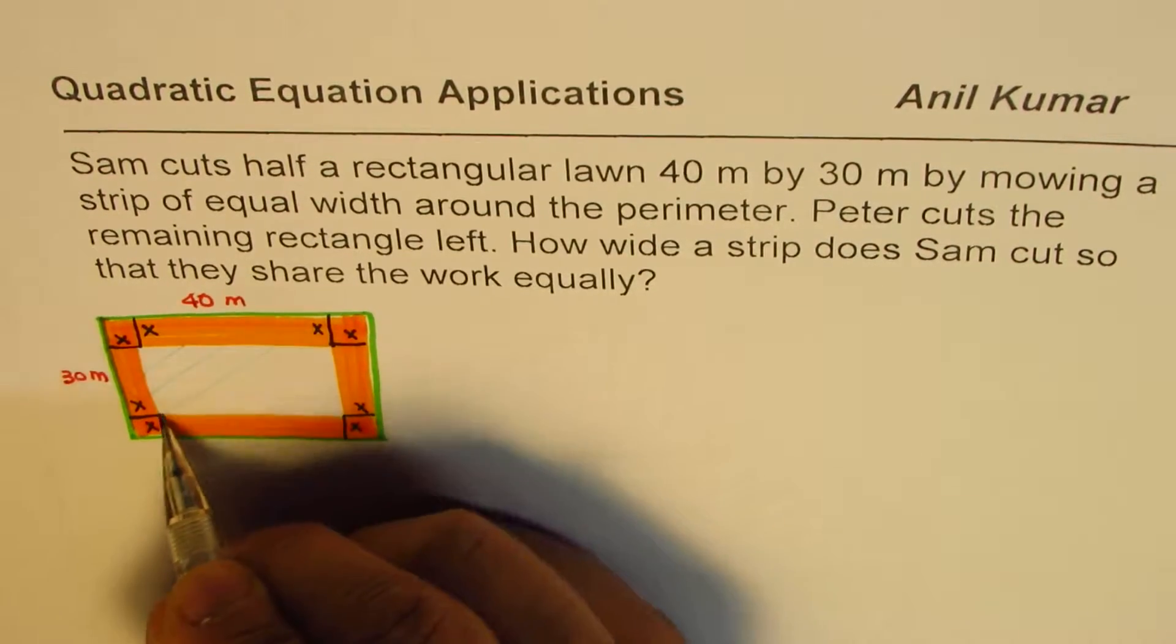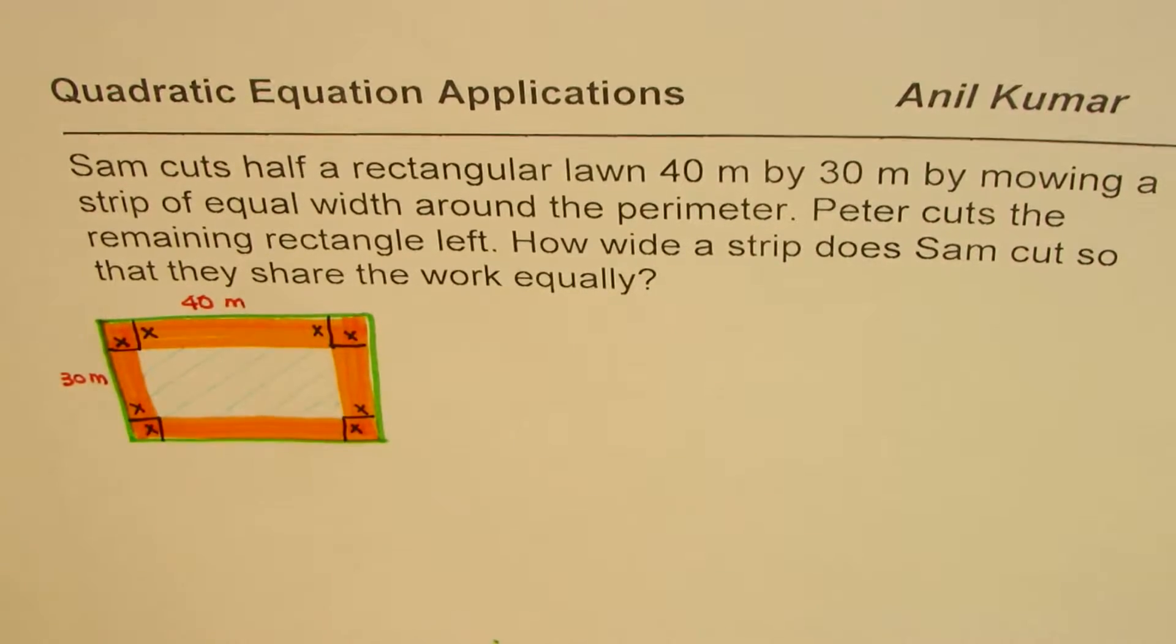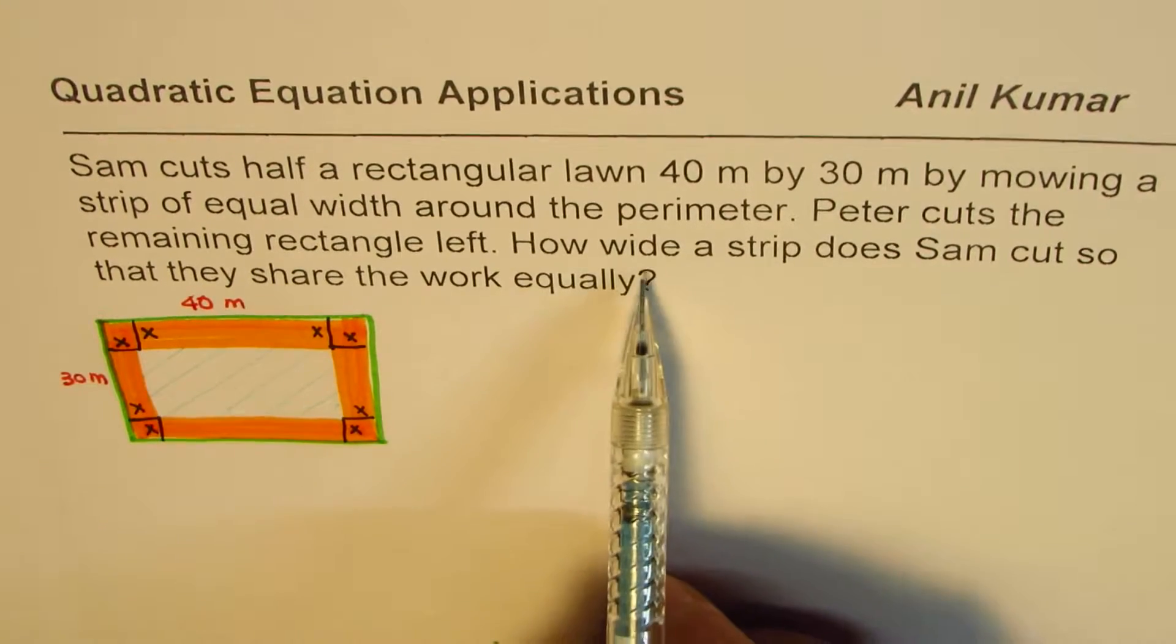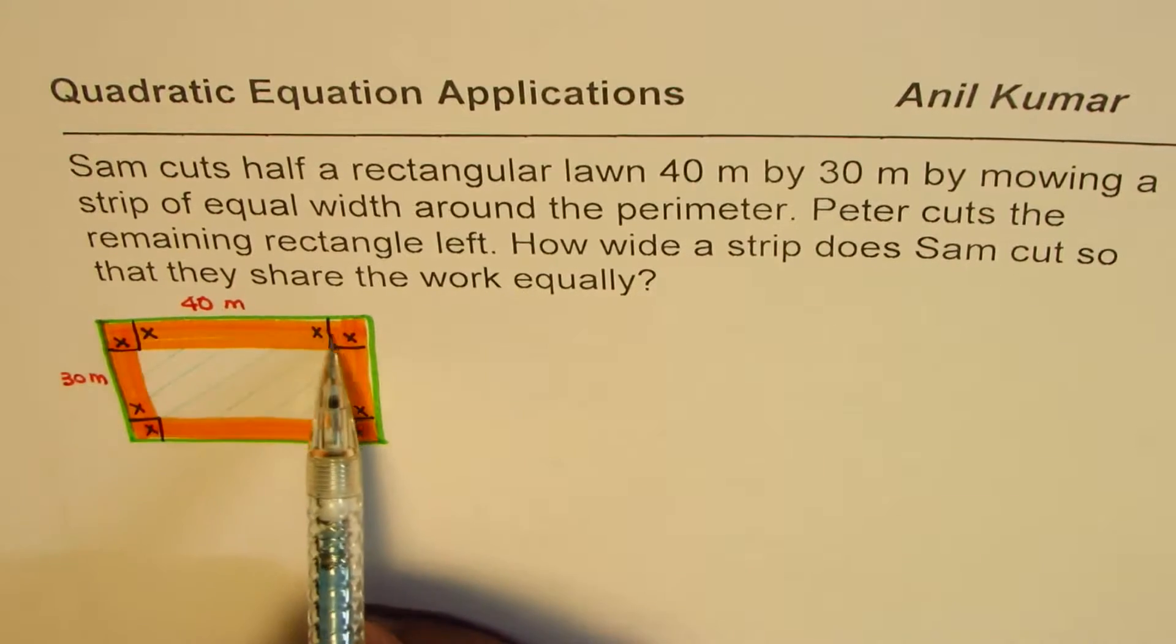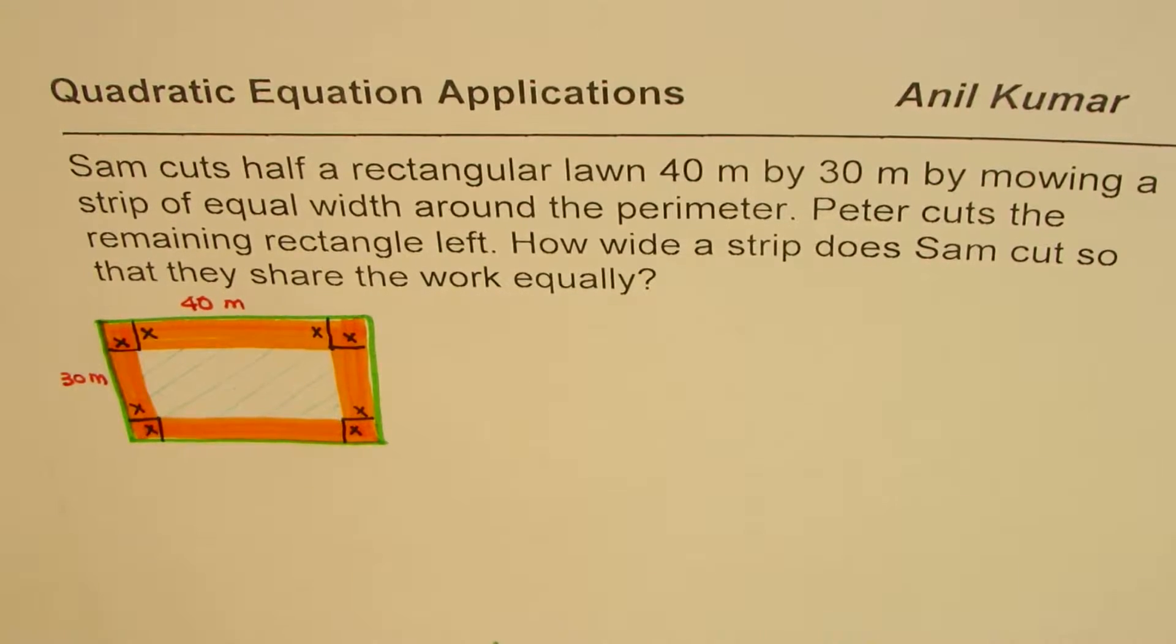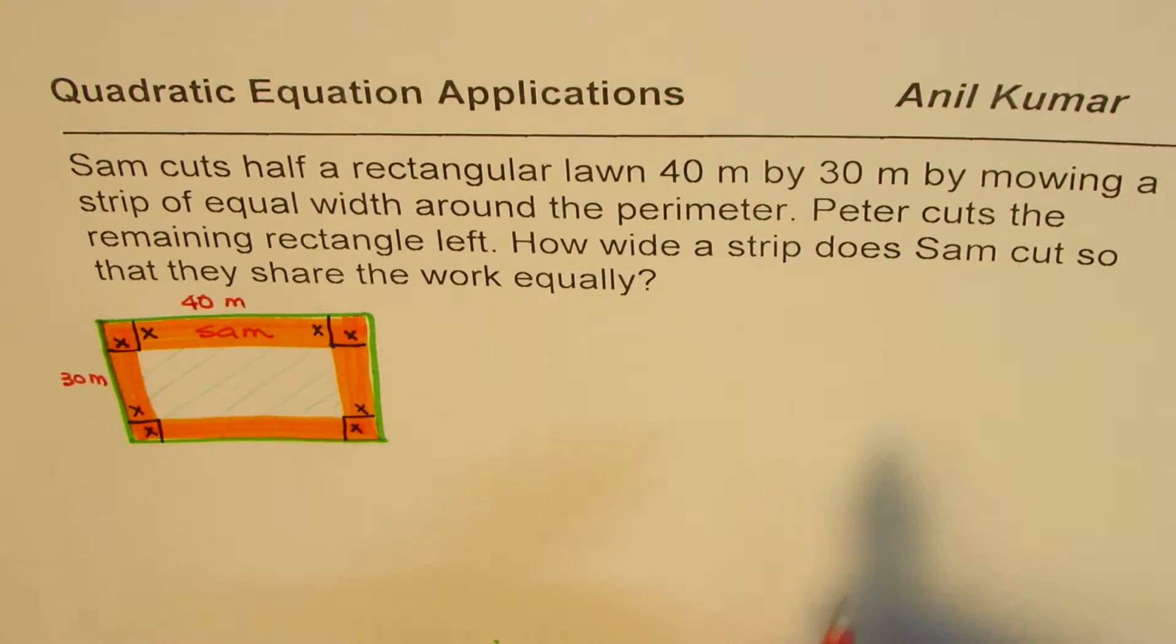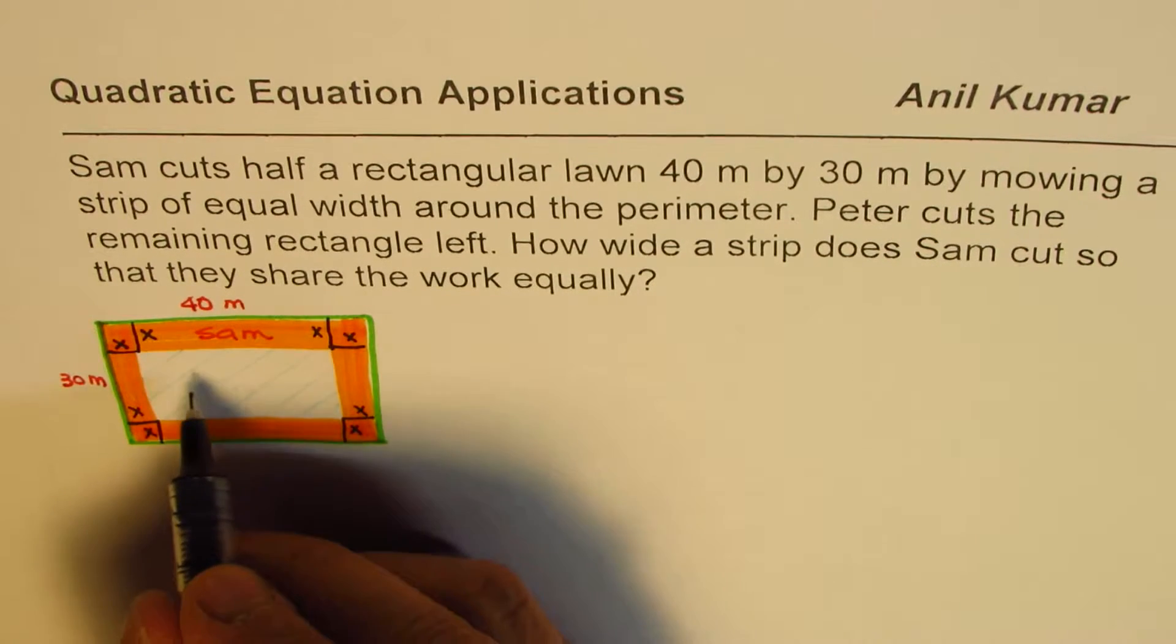Peter cuts the remaining, so this portion is done by Peter. Do you see two rectangles? How wide the strip does Sam cut? So Sam cuts the strips, this is done by Sam.